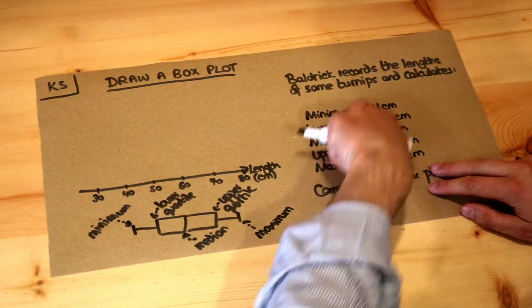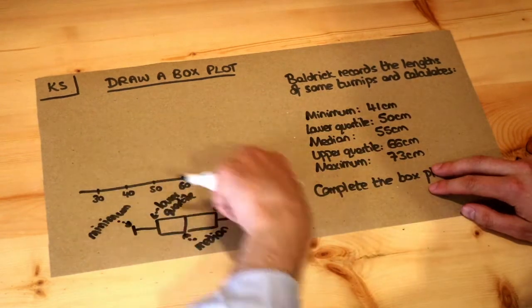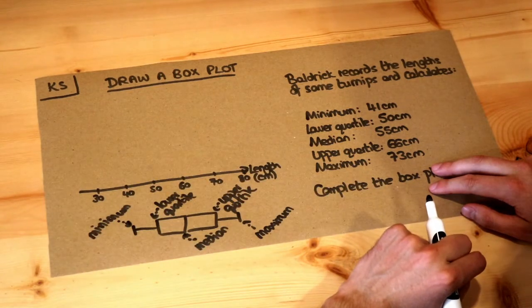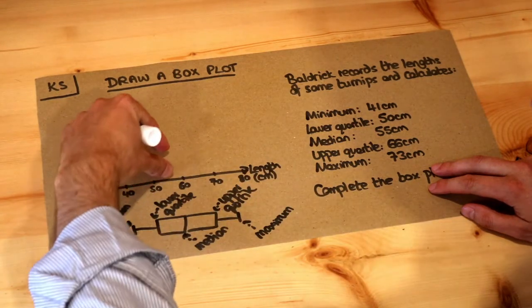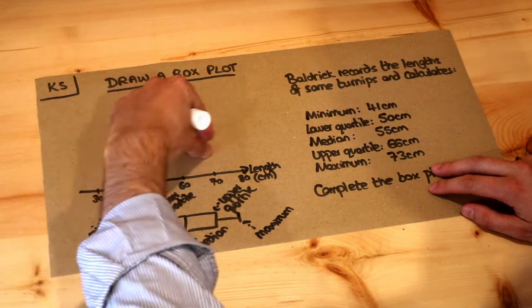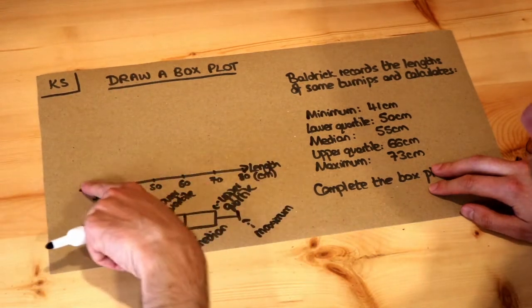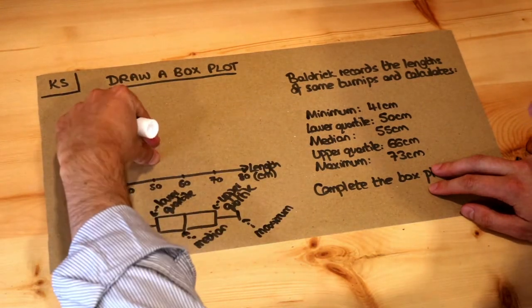So let's take these values we're already given and put them on this axis. Now I would put the box somewhere just floating above the axis, don't draw it directly on the axis, leave some space and then draw it just above.